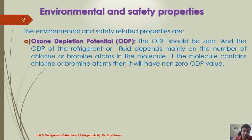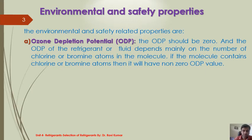As per the Montreal Protocol, which we discussed in the history, the protocol prohibits the use of any refrigerant which has a non-zero ODP value. That means all ozone-depleting substances have been phased out or have to be phased out. So in future the refrigerant should be non-ODS — non-ODS means non-ozone depleting substances.